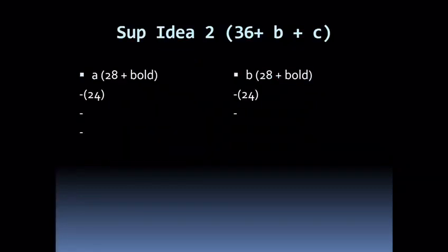For example, if you look at supporting idea two, here the ideas are divided into two parts. On one side, we have A and its subsections. On the other side, we have B and its subsections. If you have advantages and disadvantages, this is the best slide when you have two sides.